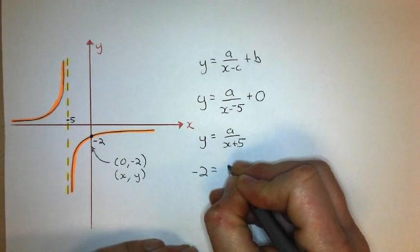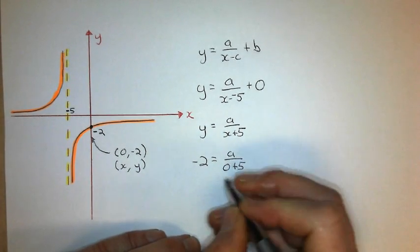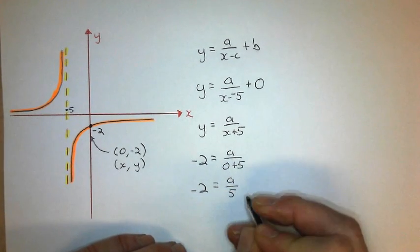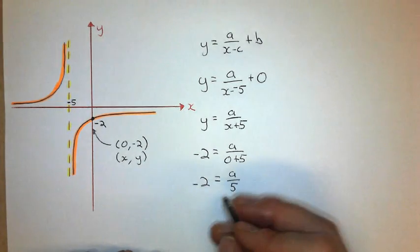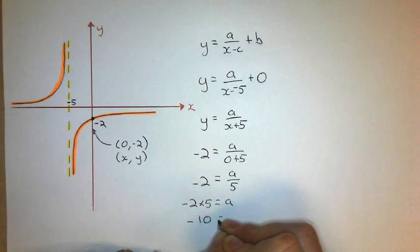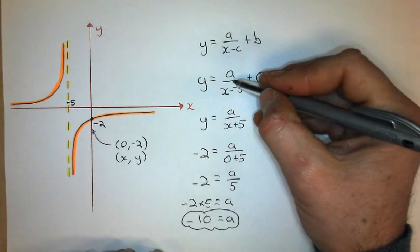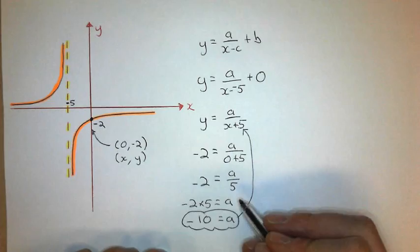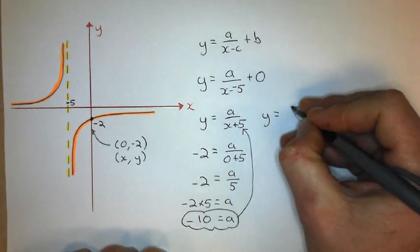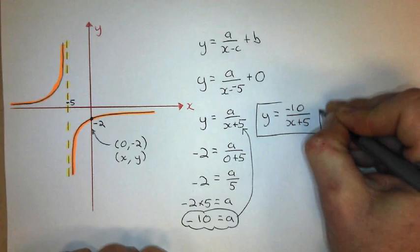So y is negative 2, a is, I don't know yet, x is 0 and I add 5. Clean the bottom part up and get negative 2 equals a over 5. And to solve for a, I just multiply this side by 5 and I get negative 10. Substitute that back into my equation. Let's put it back into the clean one up here. Not the one with two negatives or plus 0. And I get y equals negative 10 over x plus 5. Finished.